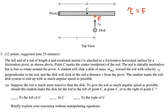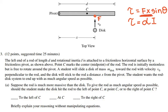Torque equals force times the distance x at which it is applied, times the sine of the angle. In our case the angle is perpendicular. Also, for rotational motion, torque equals inertia times angular acceleration, so the angular acceleration of the rod changes the most the farther away the force is applied from the pivot.